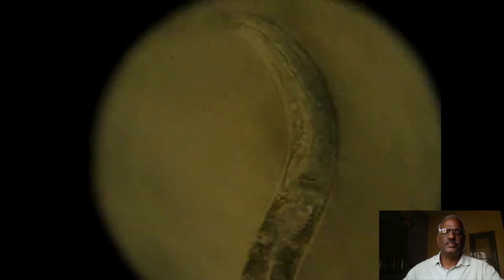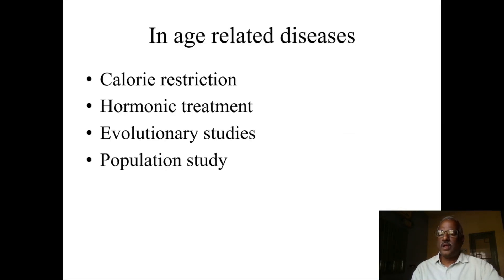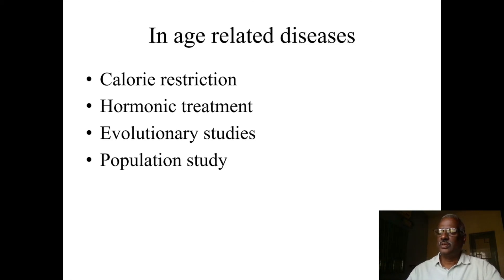Pharyngeal pumping will be greater if your drug has anti-Parkinsonism activity. C. elegans can also be used for the screening of aging and age-related diseases. Many different approaches are used in the C. elegans aging field, including genetic manipulations such as calorie restriction, hormonal treatment, evolutionary studies, and population studies.